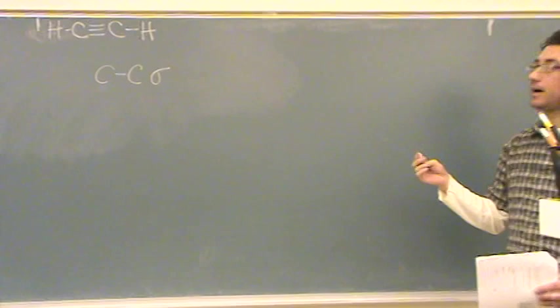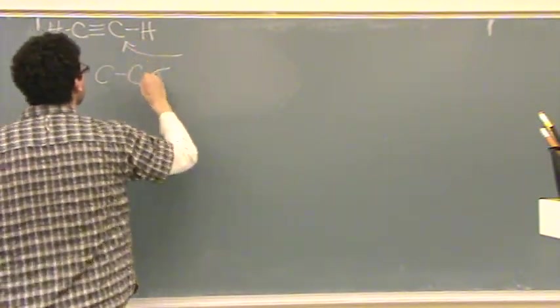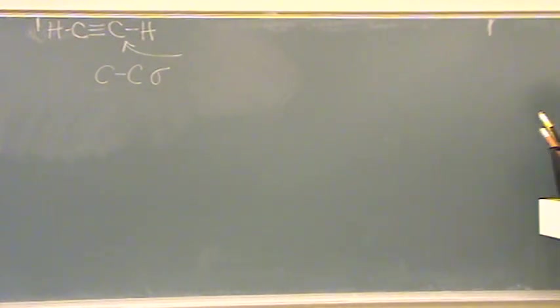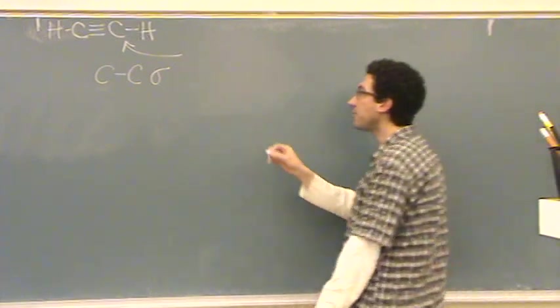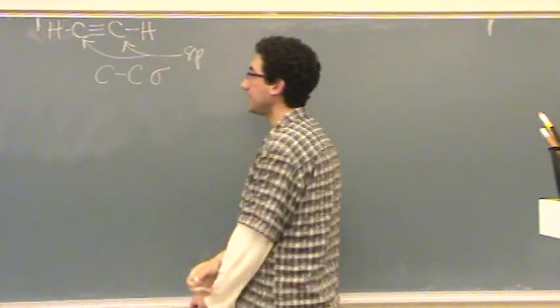What hybrid orbitals make those up? The first thing I would do is take a look at these carbons and figure out what's the hybridization. SP. Both of them are actually the same because they have two groups. Two groups, it has to be SP hybridization.